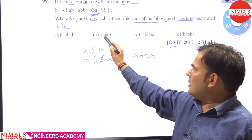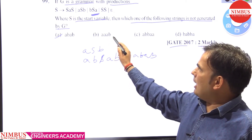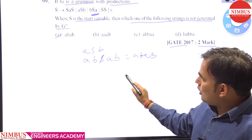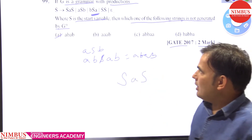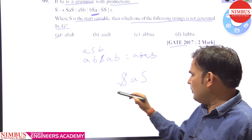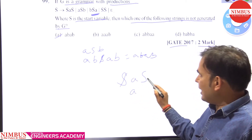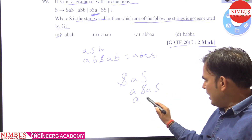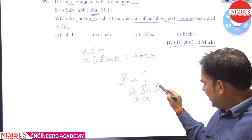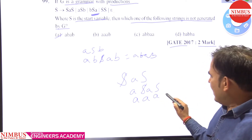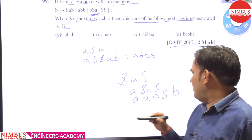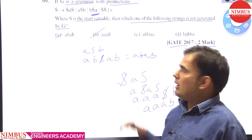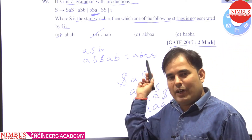Let's check the next option. We take S → A S, then S → A S again, replacing each S step by step. S → A S → A A S → A A A S, and replacing the final S with epsilon gives us triple A and B, i.e., AAAB. Yes, this is also generated by the given grammar — these types of questions are asked many times in GATE.